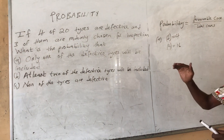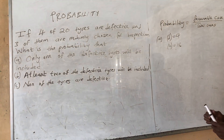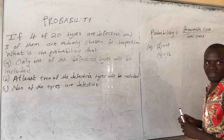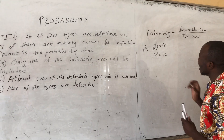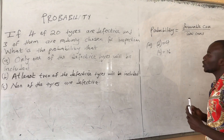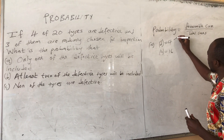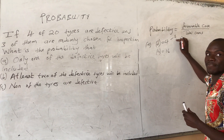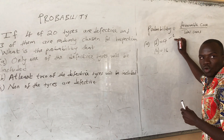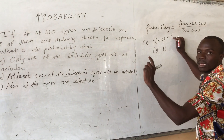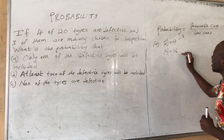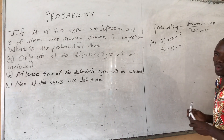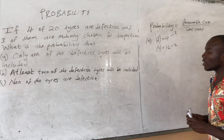Since they are saying only 1 should be defective, on that selection which you make, 1 will be gotten from those which are defective. Since they are choosing 3 at once, the other 2 will be good.